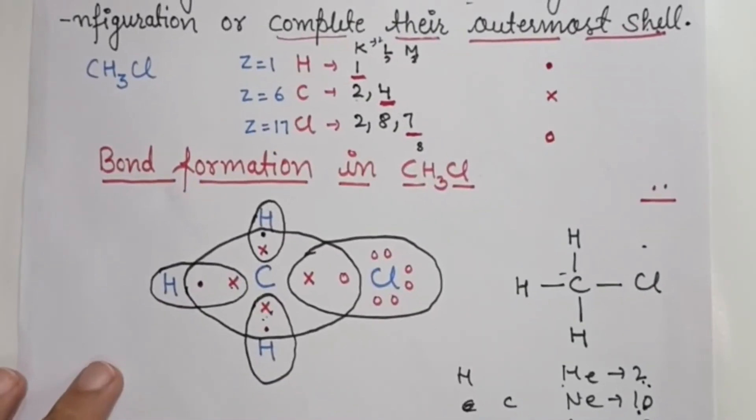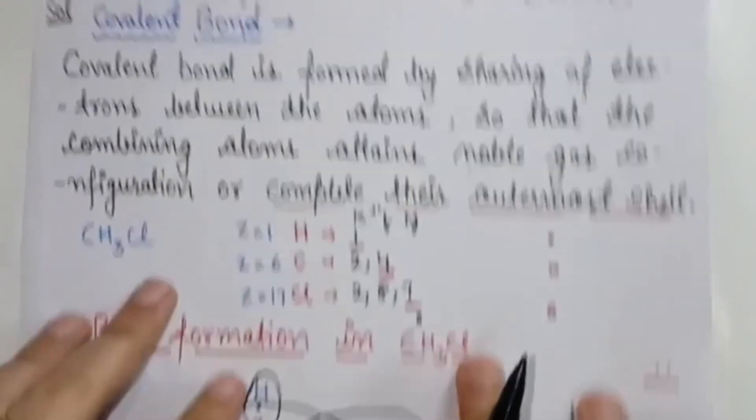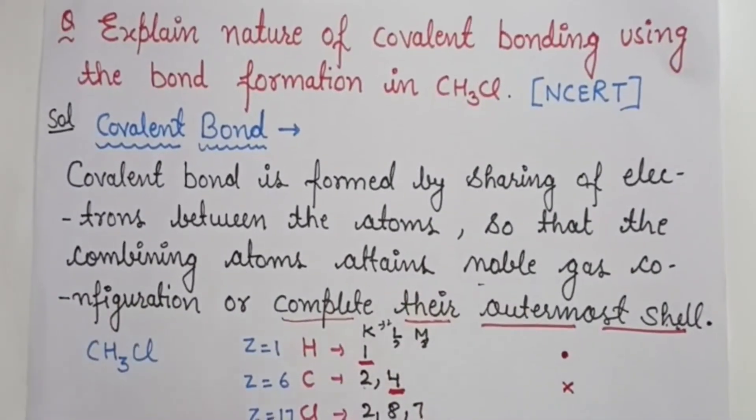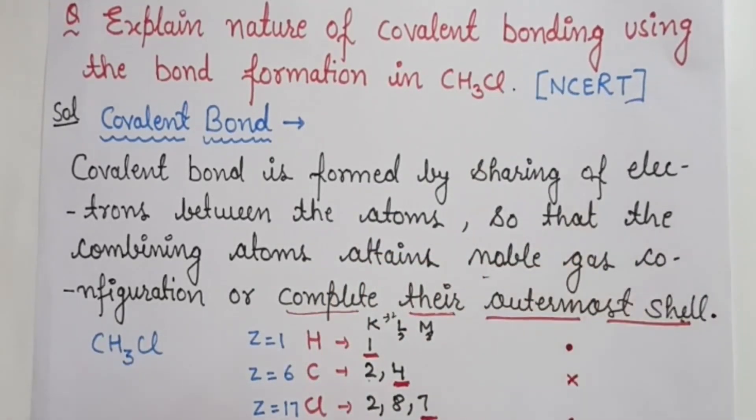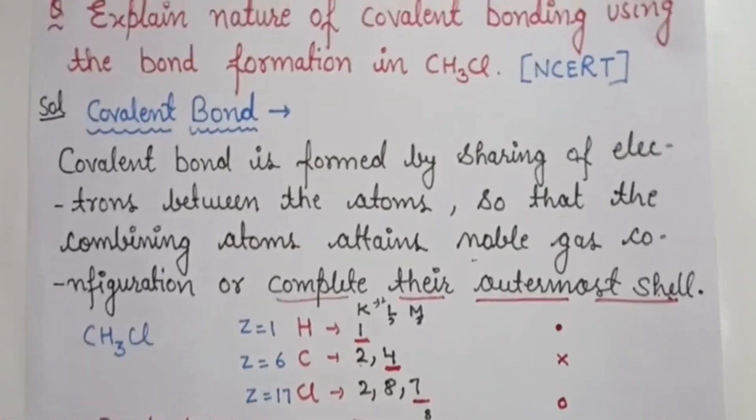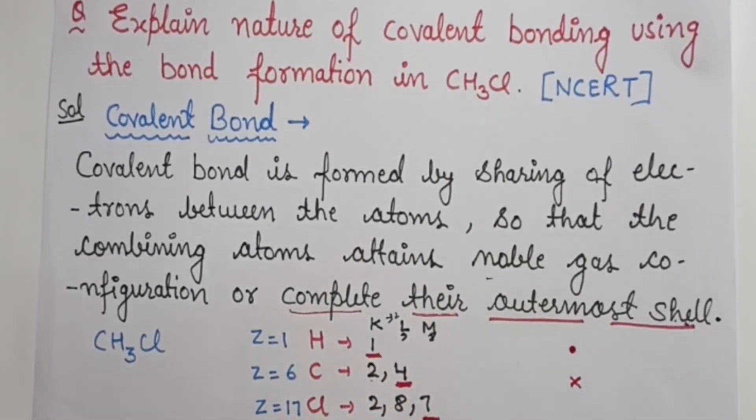So this was the question where we explained covalent bonding by taking the example of CH3Cl from NCERT. For these questions, please subscribe the channel and thank you.